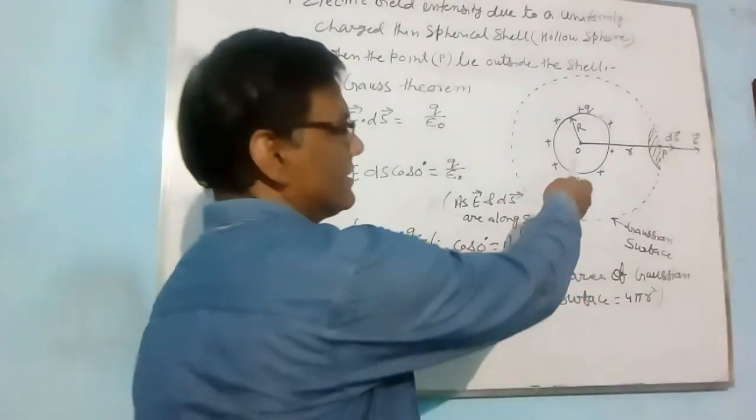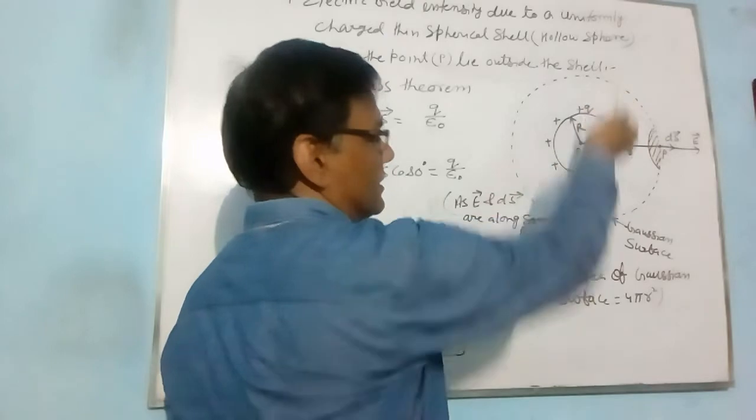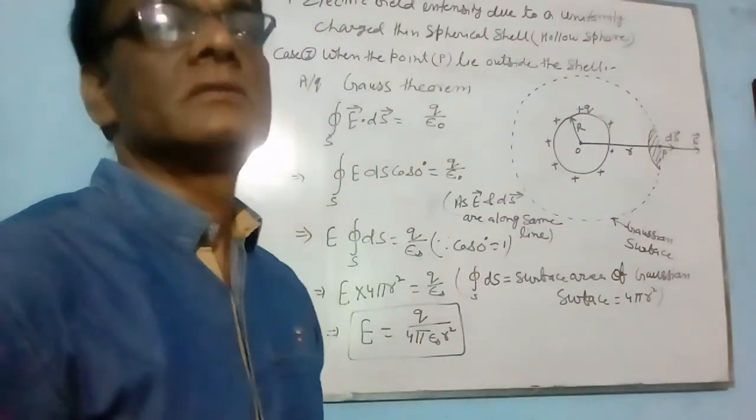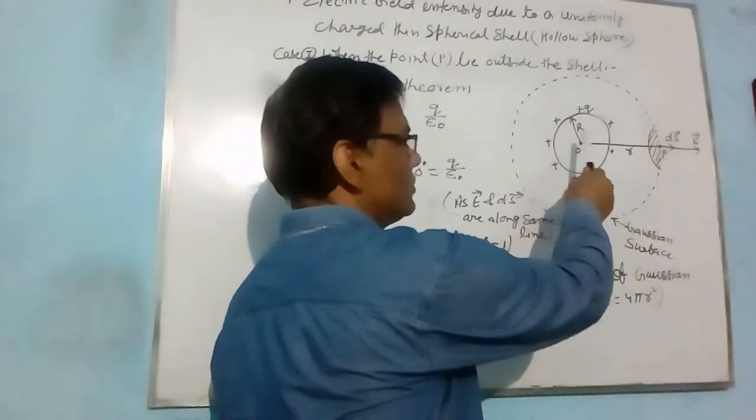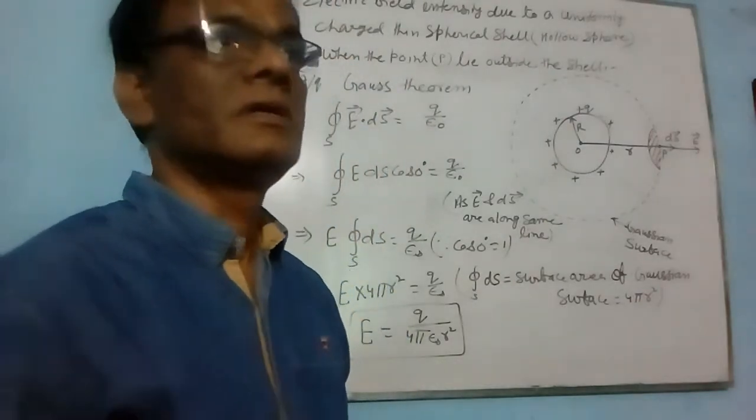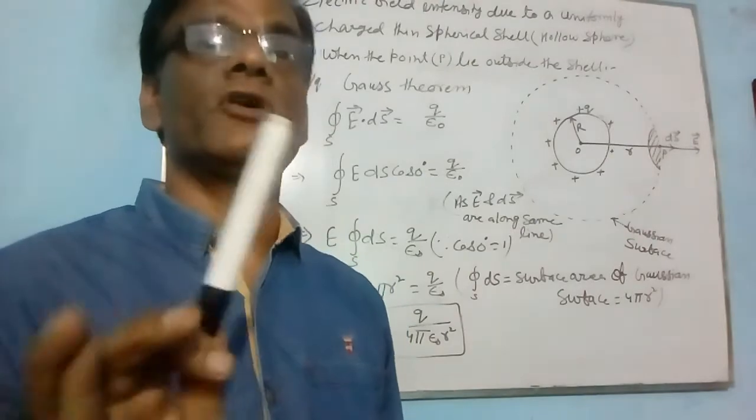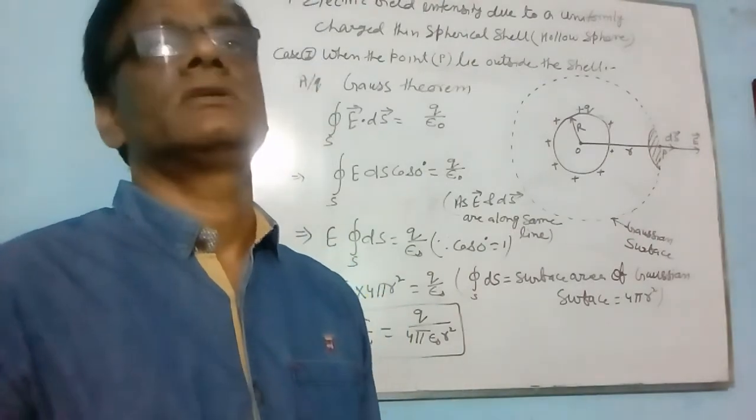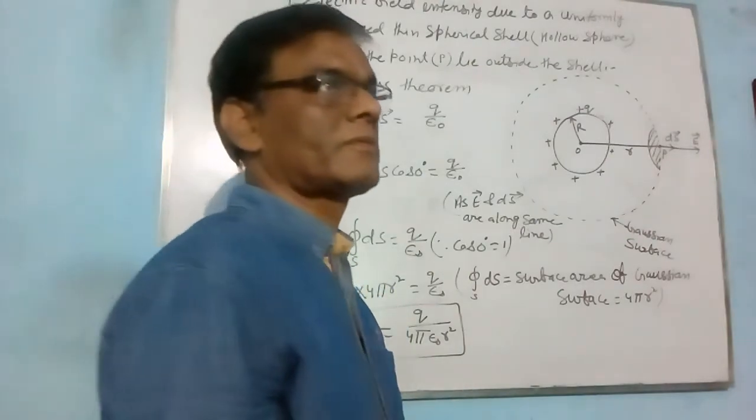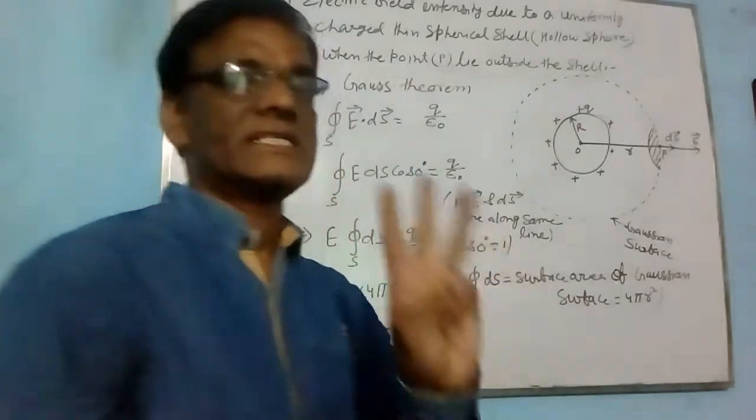You find that this is a hollow sphere whose center is O and radius is R. Positive charge Q is uniformly distributed over it. Here three cases arise.